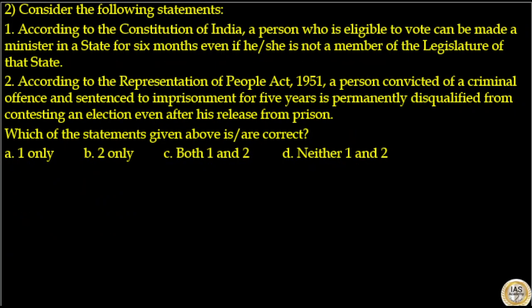Consider the following statements. Statement 1: According to the Constitution of India, a person who is eligible to vote can be made a minister in a state for 6 months even if he or she is not a member of the legislature of that state. That is incorrect. Statement 2: According to the Representation of People's Act 1951, a person convicted of a criminal offence and sentenced to imprisonment for 5 years is permanently disqualified from contesting an election even after his release from prison.